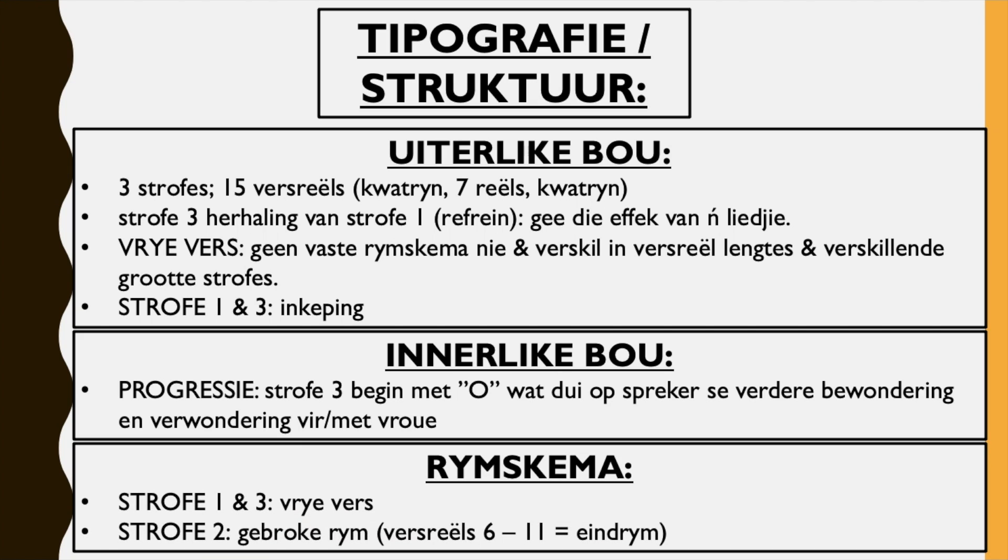And then the rhyme scheme — whether there's actually something in it that rhymes. Strofe een en drie is vrye fasie — stanza one and three is free verse. En strofe twee, gebroke raeim — fasiaels ses tot elf eindrym. So stanza two has rhyming words, six to eleven, but it's broken and therefore it's gebroke raeim.